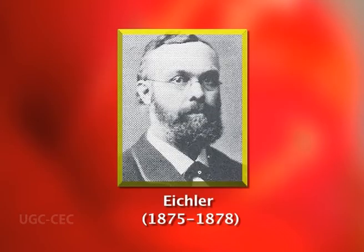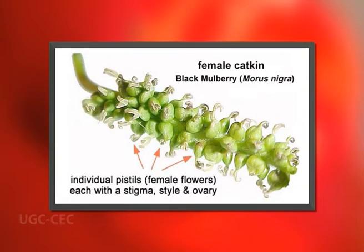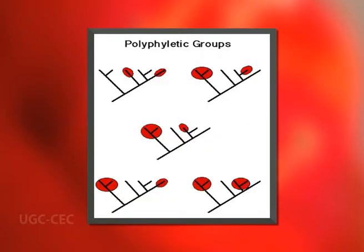Engler and Prantl made attempts to rectify the shortcomings of Eichler, Bentham, and Hooker's classification. In this system, the flowering plants were supposed to have originated along two independent lines from unknown wind-pollinated gymnosperms. One line led to the most primitive dicots, the Amentiferae, a group of wind-pollinated plants with small apetalous flowers and unisexual inflorescences called aments or catkins. The other line led to the most primitive monocots, the Pandanales.